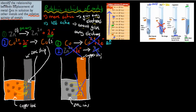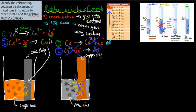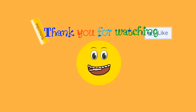To summarize: to identify the relationship between displacement of metal ions in solution by other metals and the relative activity of metals — if we want the metal in solution to deposit on the strip, the strip must be a more active metal than the solution metal. If the strip is more active than the solution, displacement occurs. If it's the less active metal, displacement will not occur. I hope that was useful — thank you for watching.